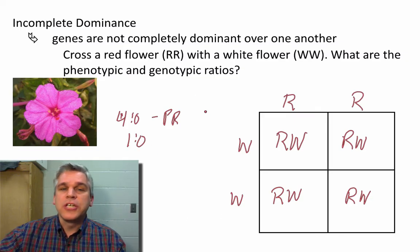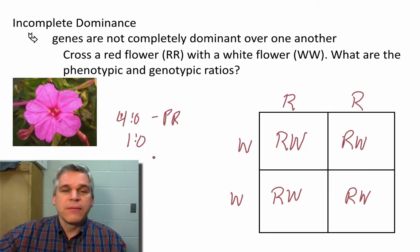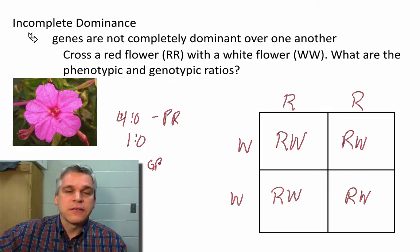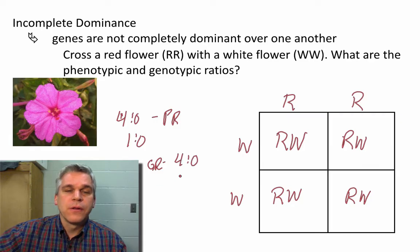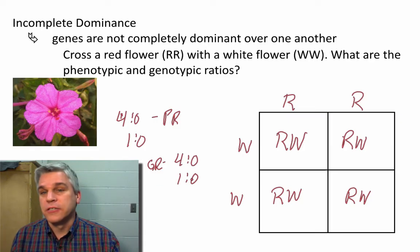The genotypic ratio — well, they're all the same. They're all RW. So in this case, the genotypic ratio is four to zero, or we can reduce that to one to zero.